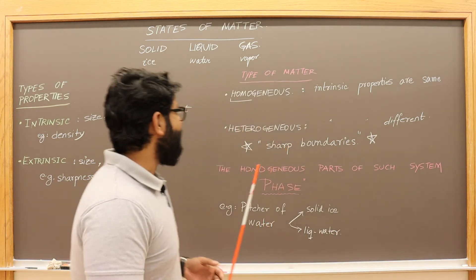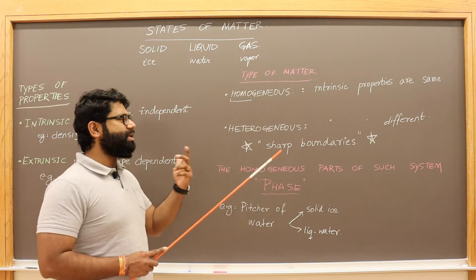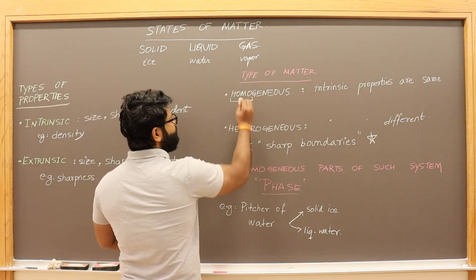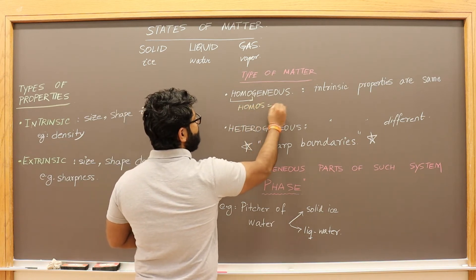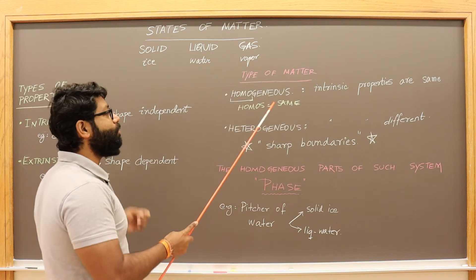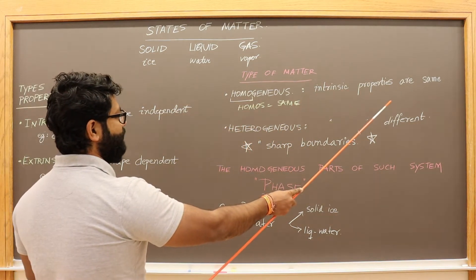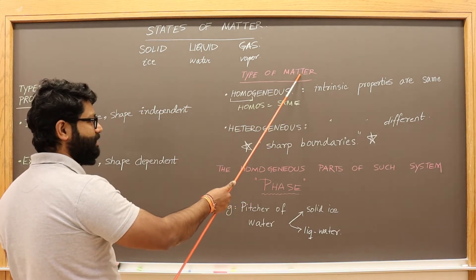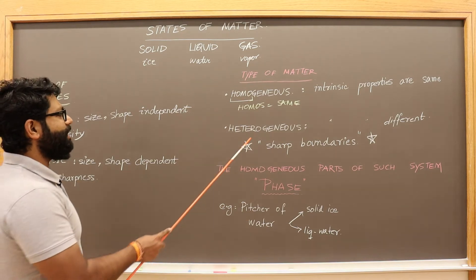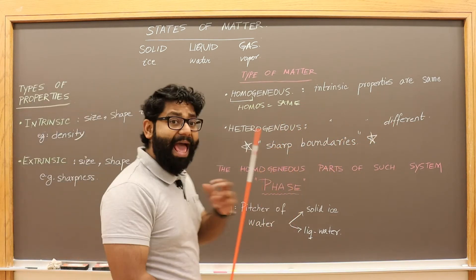Now let's see what are the different types of matter. You might have come across the term homogeneous. Let's look into the making of the word so we can have some idea about what it means. 'Homo' comes from the Greek word homos, which means 'same.' So we're talking about those intrinsic properties that remain the same. If the intrinsic properties of a type of matter remain the same, we call that matter a homogeneous matter. On the flip side, we have heterogeneous matter — types of systems in which the intrinsic properties are different and they are separated.